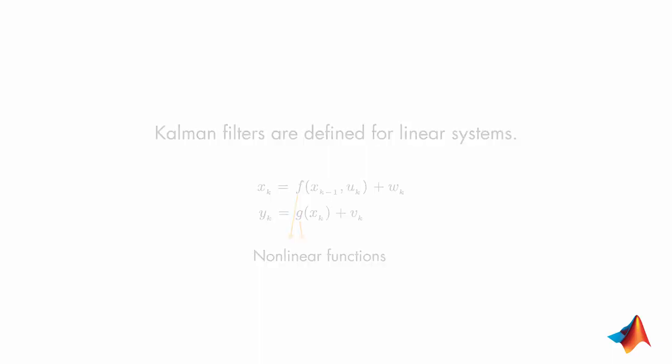Here's an example that shows the problem with using a Kalman filter for state estimation of a nonlinear system. The Kalman filter assumes a Gaussian distribution. If the state transition function is linear, then after undergoing the linear transformation, the distribution maintains its Gaussian property.